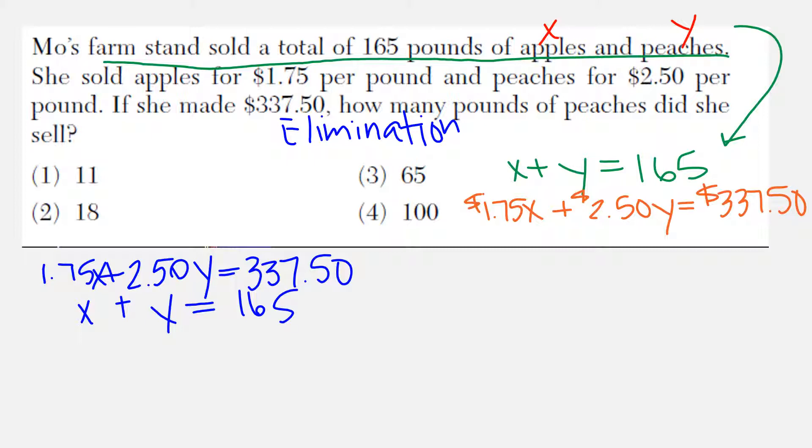I'll get rid of the Y, so I'll multiply my bottom equation by negative 2.5. This gives me negative 2.5X minus 2.5Y equals, let me use my calculator: 165 times negative 2.5 gives negative 412.5. I didn't change the top equation, so I'll just rewrite it: 1.75X plus 2.50Y equals 337.50.